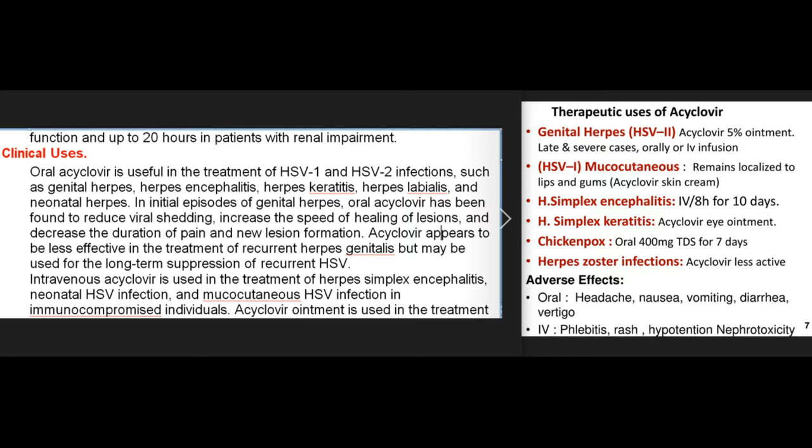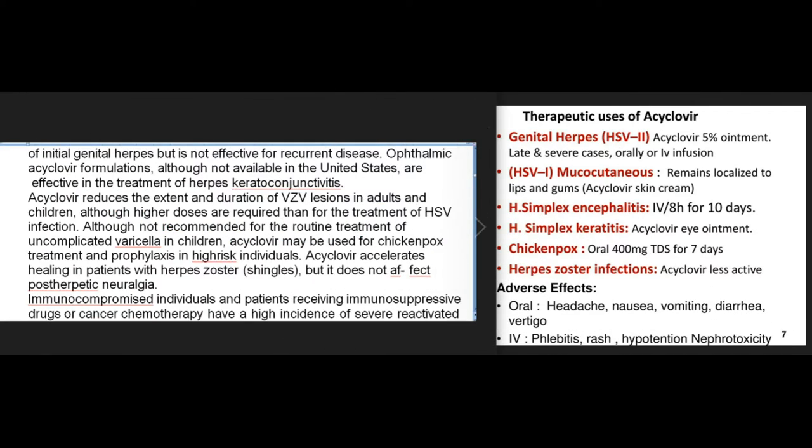Clinical uses: Oral acyclovir is useful in the treatment of HSV-1 and HSV-2 infections such as genital herpes, herpes encephalitis, herpes keratitis, herpes labialis, and neonatal herpes. In initial episodes of genital herpes, oral acyclovir has been found to reduce viral shedding, increase the speed of healing of lesions, and decrease the duration of pain and new lesion formation. Acyclovir appears to be less effective in the treatment of recurrent herpes genitalis but may be used for long-term suppression of recurrent HSV. Intravenous acyclovir is used in the treatment of herpes simplex encephalitis, neonatal HSV infection, and mucocutaneous HSV infection in immunocompromised individuals. Acyclovir ointment is used in the treatment of initial genital herpes but is not effective for recurrent disease.